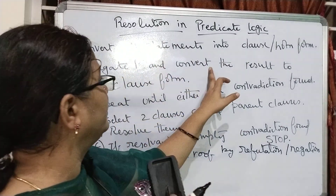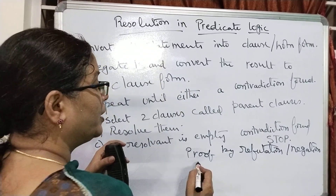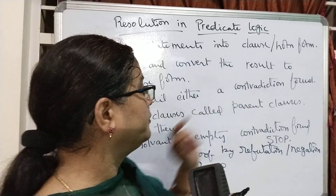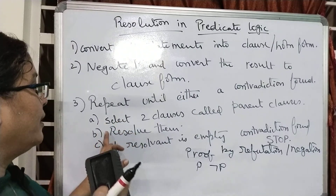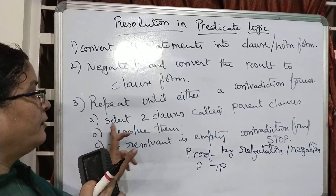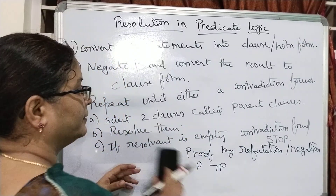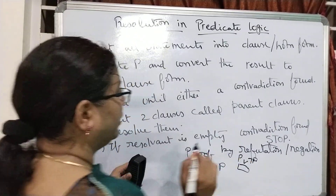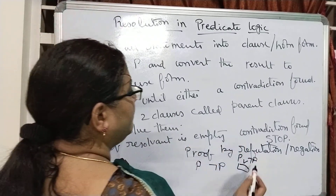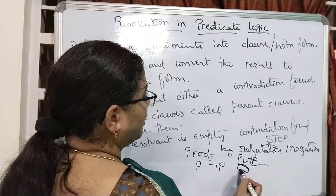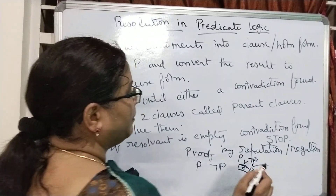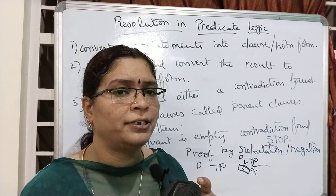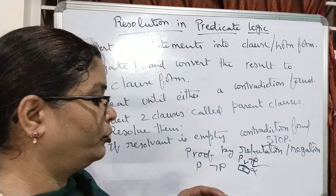Whenever a contradiction is found, we can say that what we started with — like 'Rama is a bad boy' — is false, confirming the original goal. That is why the second step says: negate P and convert to clause form. You want to prove P, so you start with the negation of P. Then repeat until either a contradiction is found: select two clauses called parent clauses — for example P and negation-P — resolve them, and if the resolvent is empty then contradiction is confirmed and the algorithm stops.